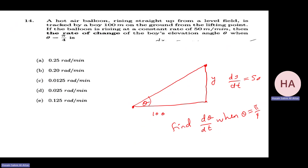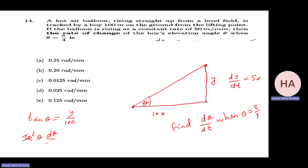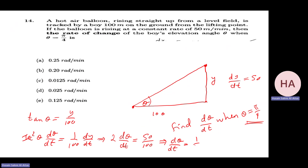The relation is tan θ = y/100. Differentiating: secant²θ · dθ/dt = (1/100) · dy/dt. I know the angle, so: secant²(π/4) = (√2)² = 2, giving 2 · dθ/dt = 50/100. Therefore dθ/dt = 1/4 = 0.25.